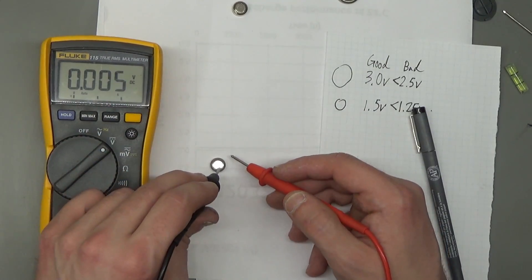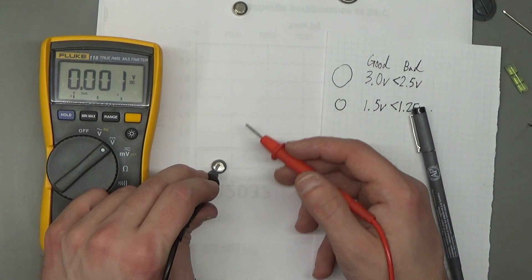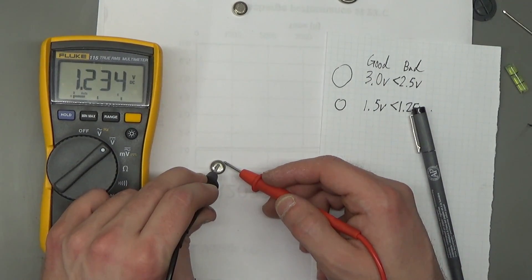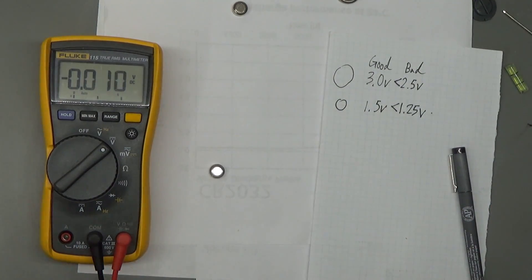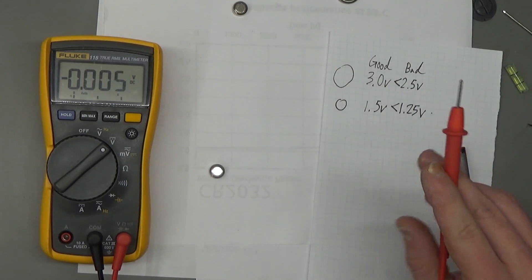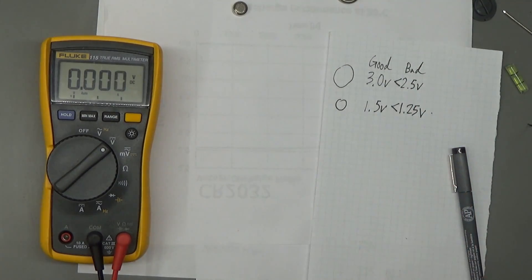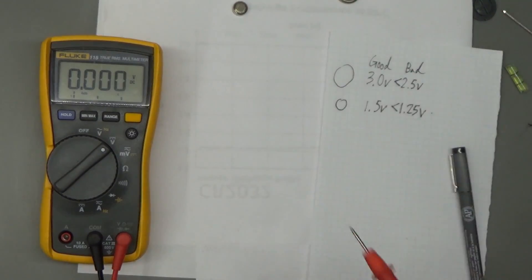And then the last battery: black lead in the center, red lead on the side. 1.234, so that's just under the 1.25 mark. That may give you like a couple more hours of use for a certain device, but at that point when you've measured it, you've already spent enough time on that battery, so I'd recommend recycling that one as well. So that's how you go about testing batteries in general when it comes to coin cells and button cells.